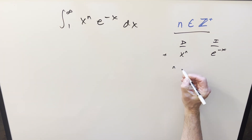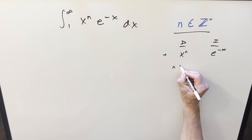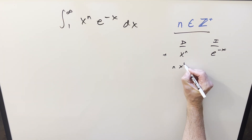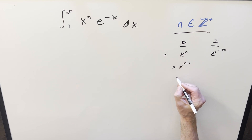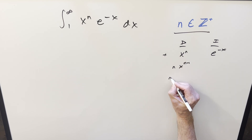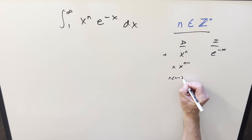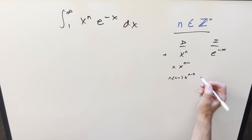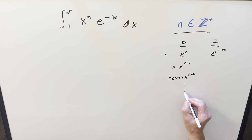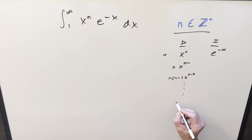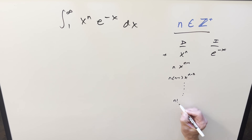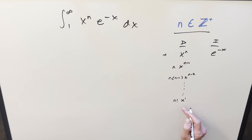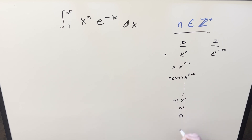Let's go ahead and get some terms differentiating here. We're going to have n times x to the n minus one. Then we'll do it again: n times n minus one times x to the n minus two. This is going to keep going like this all day long. Eventually we'll get to n factorial times just x to the one. Differentiate that, you just get n factorial. Differentiate it again, you get zero.